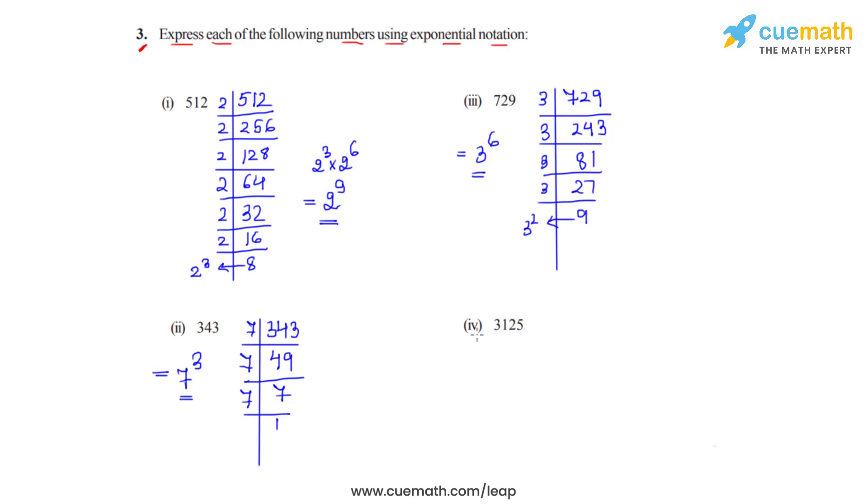We'll now be solving the last bit, the fourth bit of this question. So 3125 is to be prime factorized. We'll take the number 5 first. So on dividing 3125 by 5 gives us 625. Dividing 625 by 5 gives us the answer as 125. Dividing 125 by 5 gives us the answer 25. 25 on division by 5 gives us 5. 5 on division by 5 gives us the answer 1.